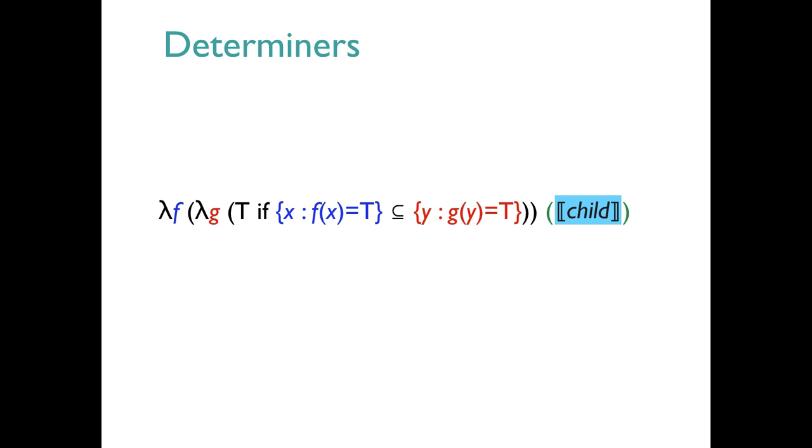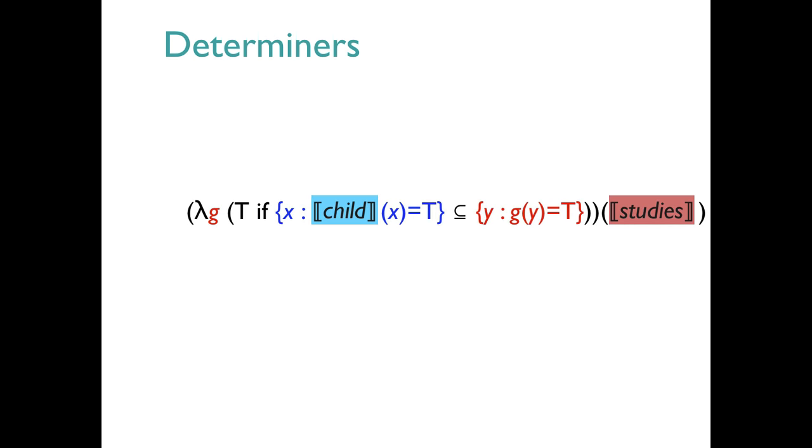Let's see how these work in the context of a larger derivation. Here we have the meaning of every with the child function as its argument. The argument knocks out the lambda F and gets substituted in. The second argument, the meaning of studies, does the same thing, but now with the G argument. It comes in and then gets substituted. In the end we get something that reduces down to the claim that the children are a subset of the studiers, which is exactly what our previous view delivered. The advantage of the new perspective is that it's easy to incorporate these functional meanings into a very general theory of semantic composition. The full power of the approach will become more evident in the context of our semantic grammar, which is the topic of the next screencast.